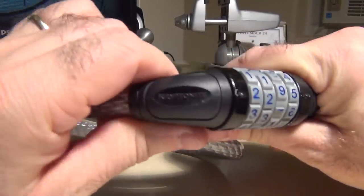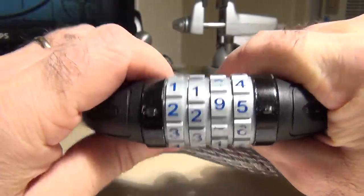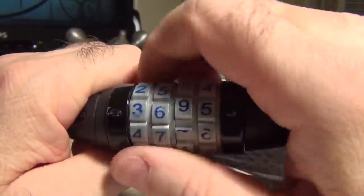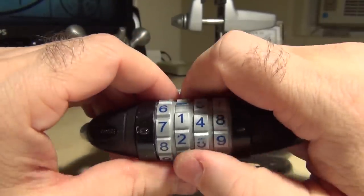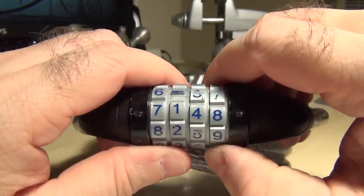Hey everybody, this is Get Sideways. Today I have a Kryptonite combination bicycle lock. It's got four dials on it here. What we're going to do is we're going to crack this thing or decode it however you want to put it.